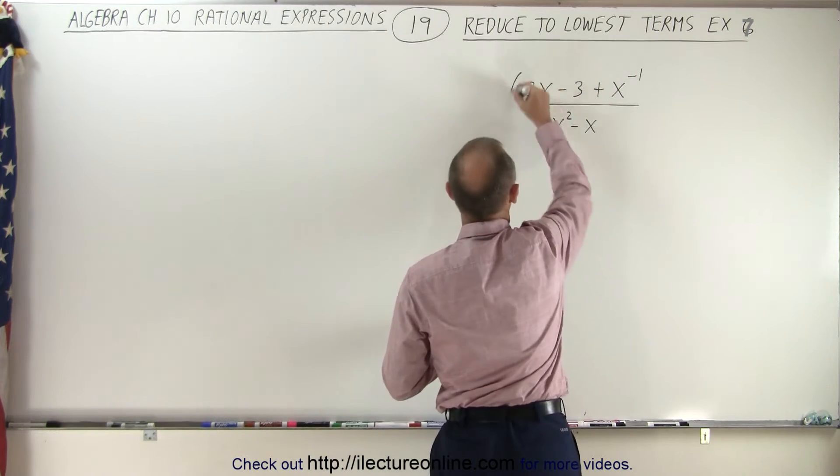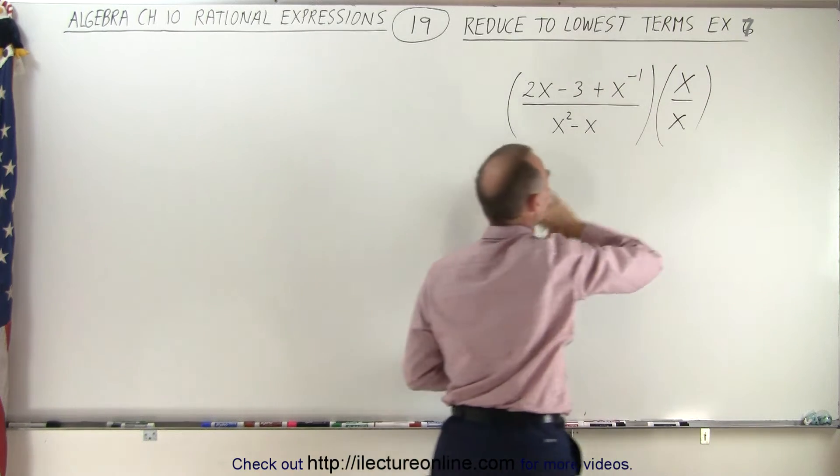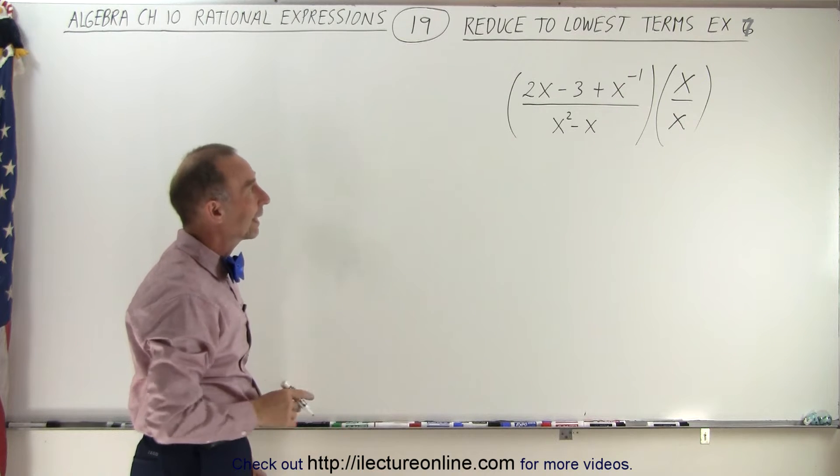In other words, we're going to multiply this expression times x over x. By multiplying both the numerator and the denominator by x, we get rid of the negative exponent.